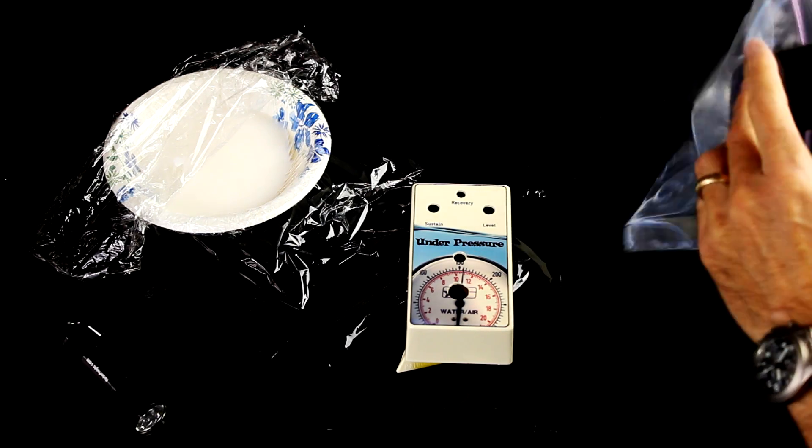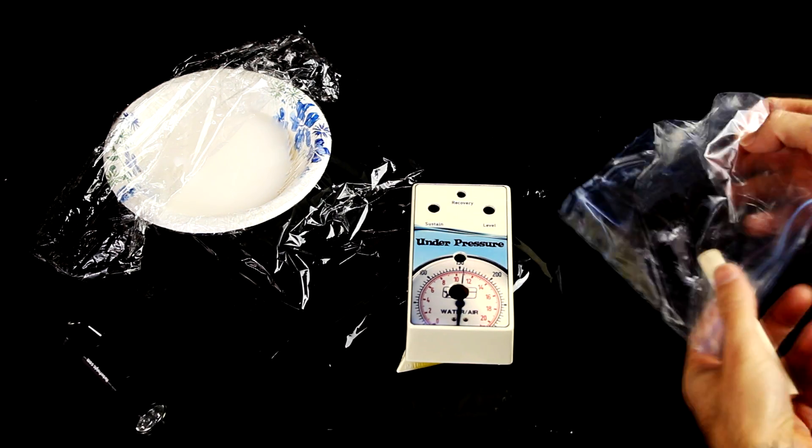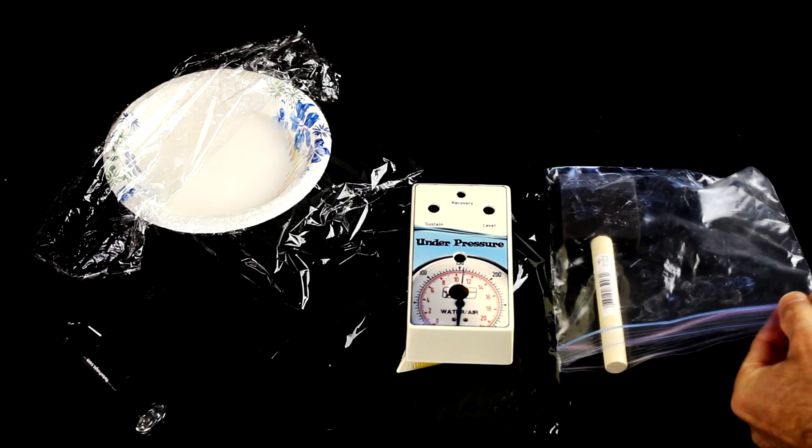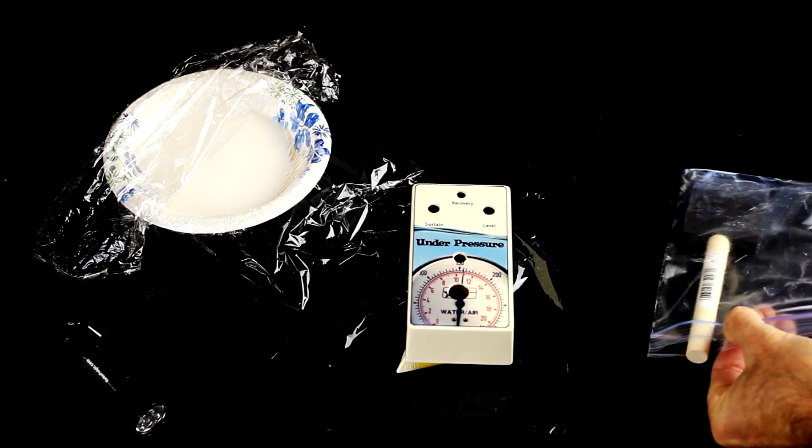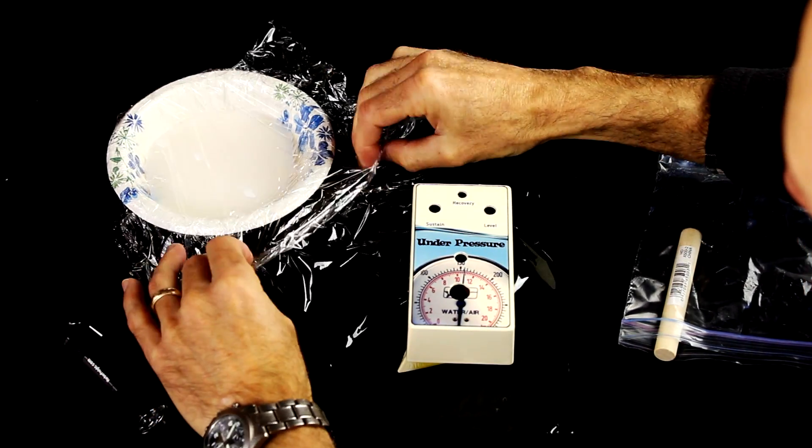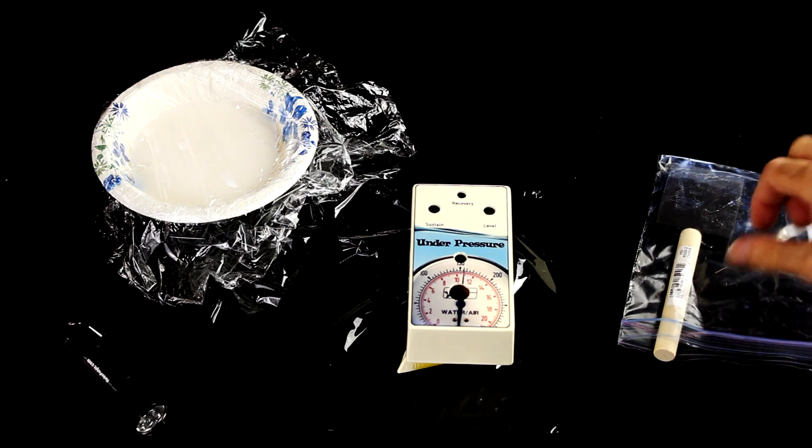Between coats, I'm just going to store the foam brush in a Ziploc bag and zip it close, try to get all the air out of it, and that'll stop the finish from curing on the brush. Of course, you can just wash the brush with water between coats, but this saves a step. I'm also going to cover up the bowl with plastic to stop it from curing.